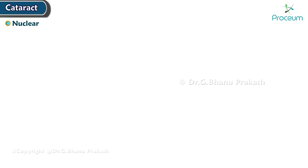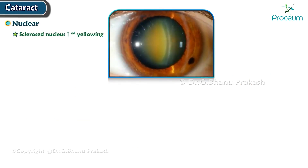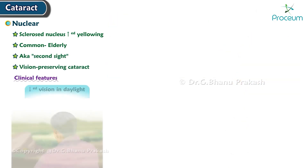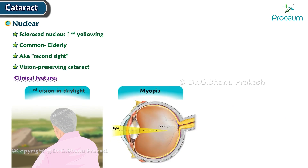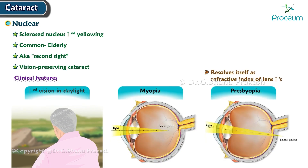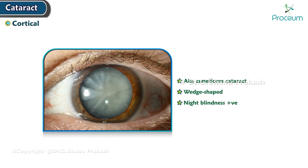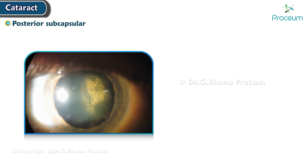Nuclear cataract is a sclerosed nucleus with increased yellowing. It is commonly seen in the elderly and is also known as 'second sight' — it is a vision-preserving cataract. It presents with decreased vision in daylight and myopia, while presbyopia resolves as the refractive index of the lens increases. Cortical cataract, also known as cuneiform cataract, is wedge-shaped; patients present with night blindness.